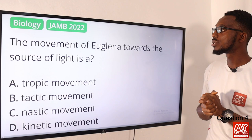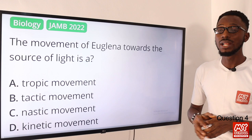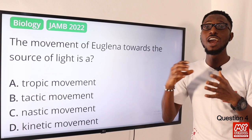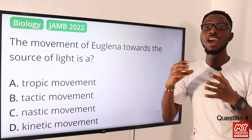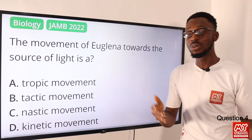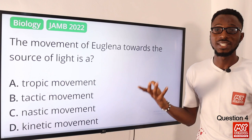Question four: the movement of Euglena towards the source of light is what? When a motile organism moves its entire body in response to a stimulus, that is called a tactic movement or taxis. Since the stimulus here is light, this is phototaxis — specifically positive phototaxis because Euglena is moving towards the light source. The correct option is D.